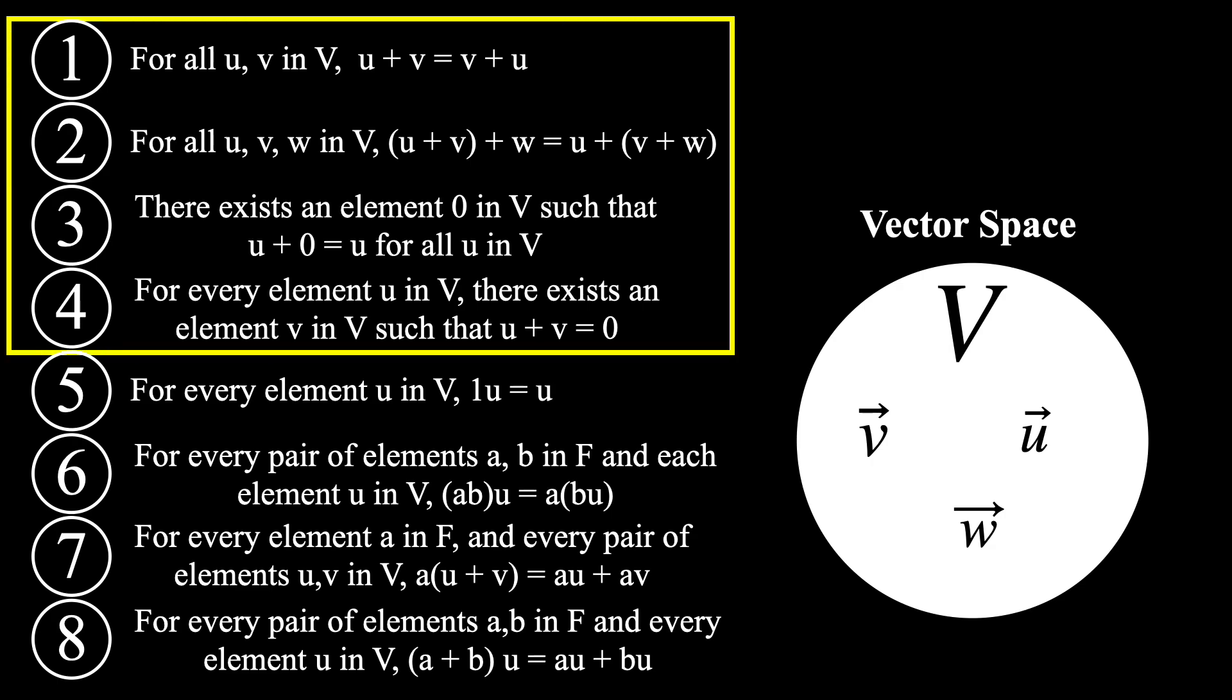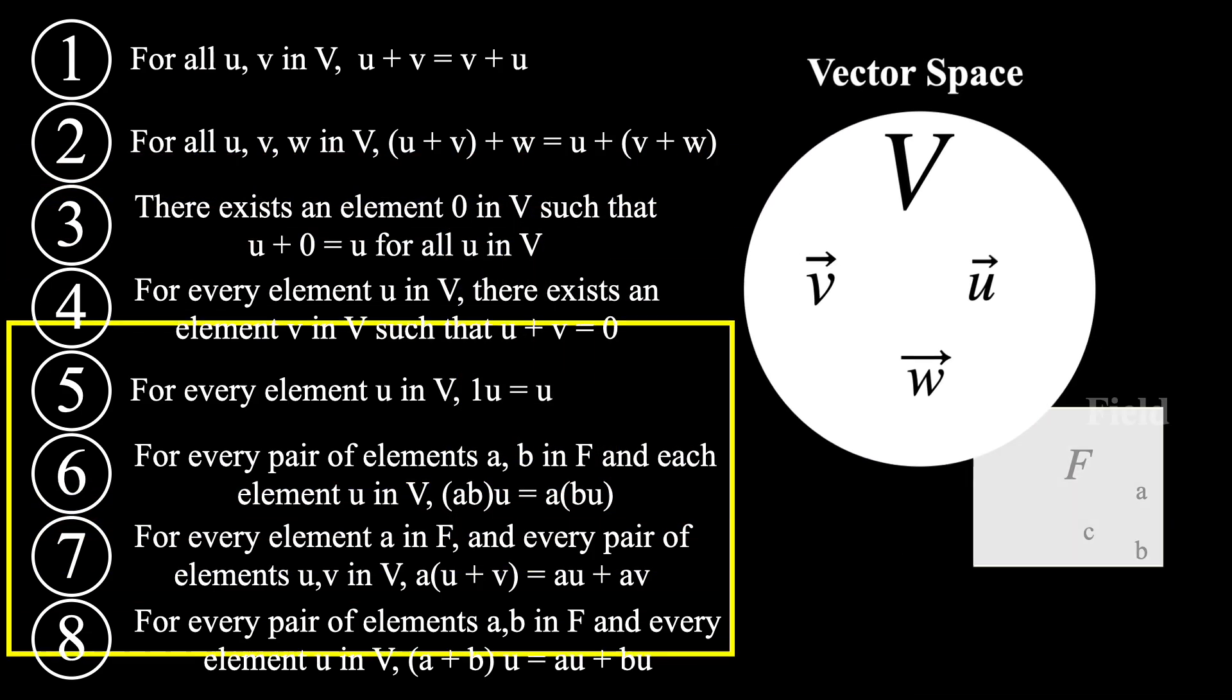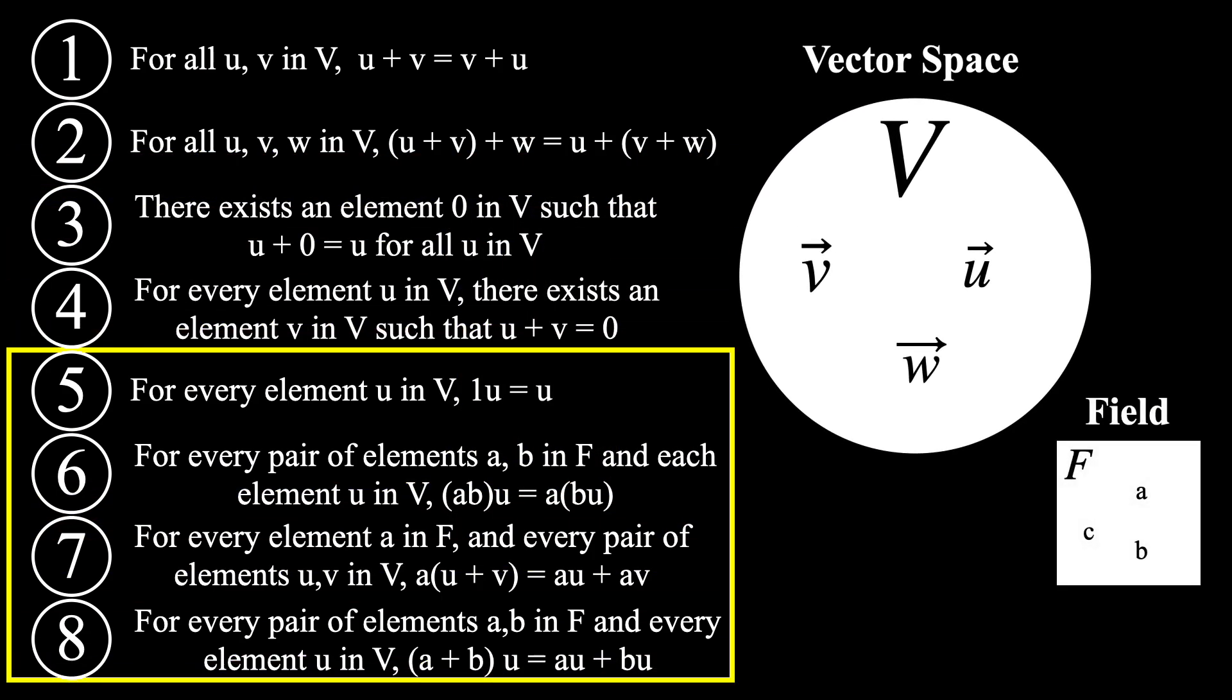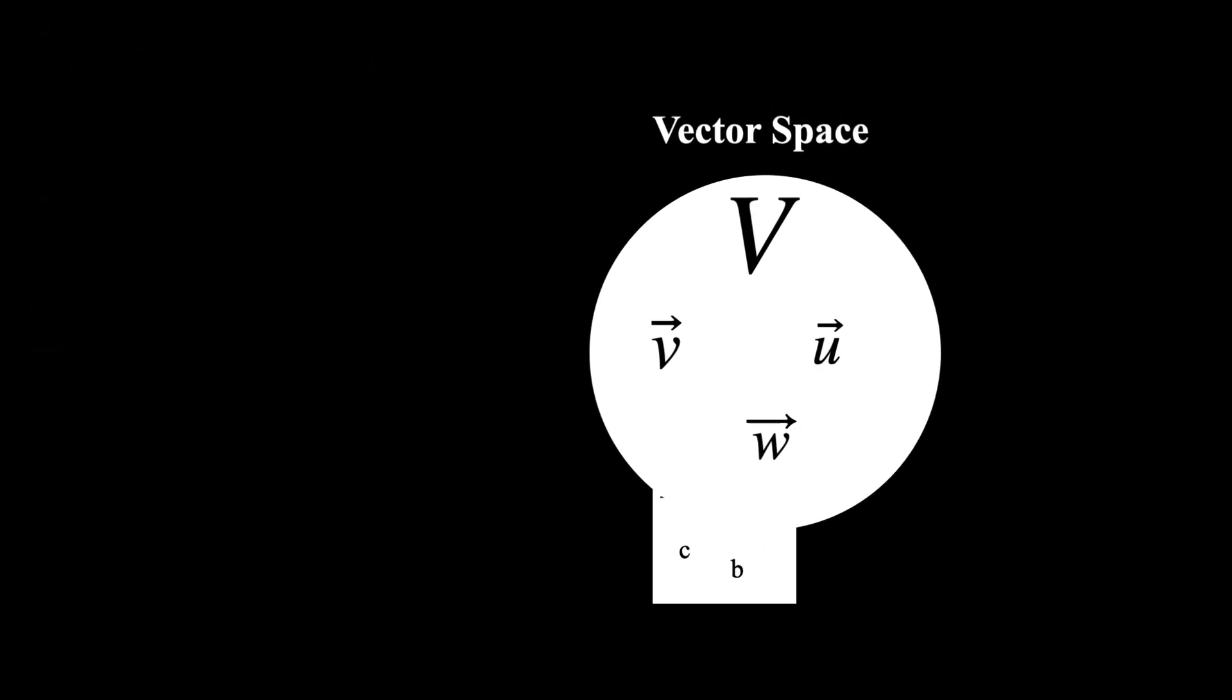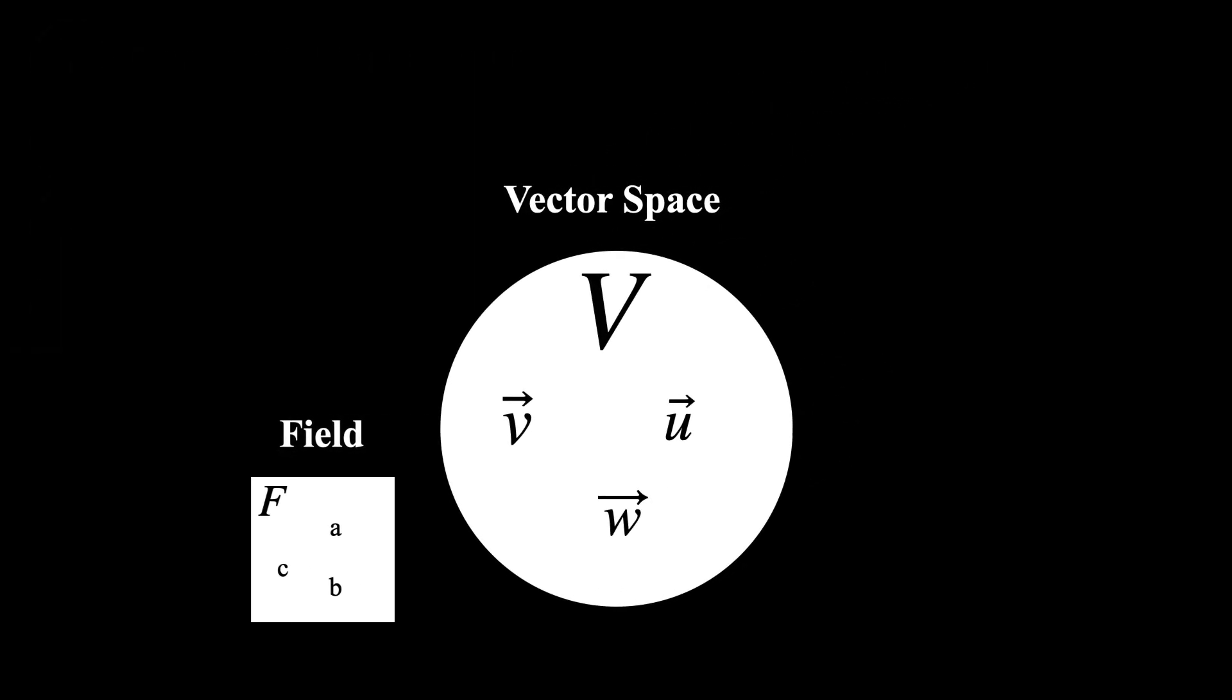The first four axioms show how vectors can be added together, and the final four axioms show how these vectors interact with scalars, which are elements of another algebraic structure called a field. Okay, so vectors are things that live in vector spaces.